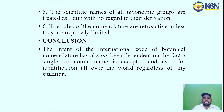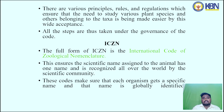The conclusion of ICBN: the intent of the International Code of Botanical Nomenclature is that a single taxonomic name is accepted and used for identification all over the world, regardless of any situation. There are various principles, rules and regulations which ensure that the study of various plant species and other taxa is standardized. All steps are taken under the governance of the code.